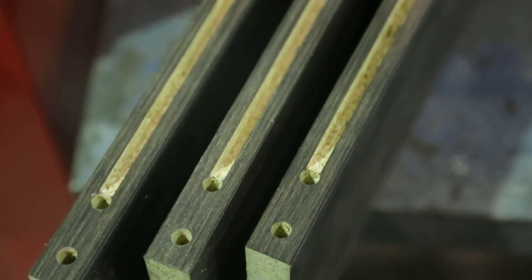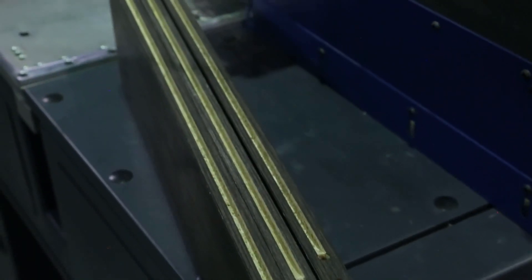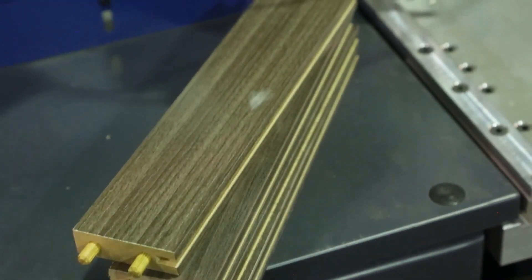In addition to making 5-piece doors, the HP5D can be used as a standard drill and dowel machine to produce cabinet boxes or face frames.